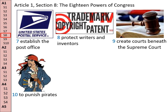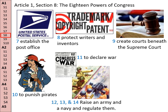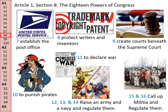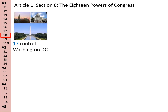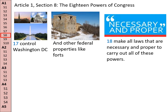Power number 10: to punish pirates. Power number 11: to declare war — Congress declares war, not the President. Powers 12, 13, and 14 give Congress the power to raise an army and a navy and to regulate them. Powers 15 and 16 give the power to Congress to call up a militia and to regulate them. Power number 17 is the power to control Washington, D.C., and other federal properties, like forts. Power number 18 is the power to make all the laws that are necessary and proper in order to carry out the previous 17 powers.